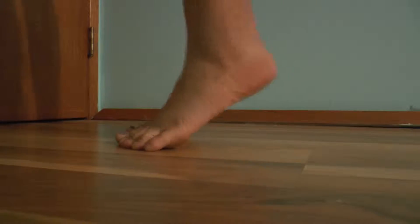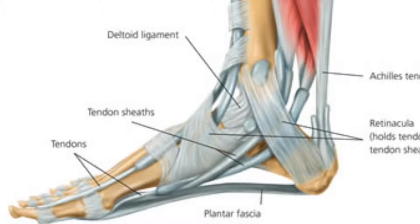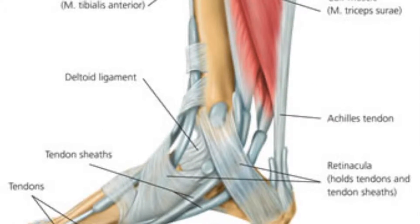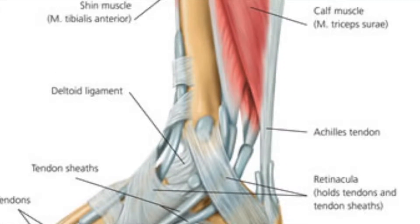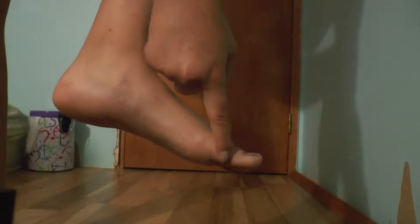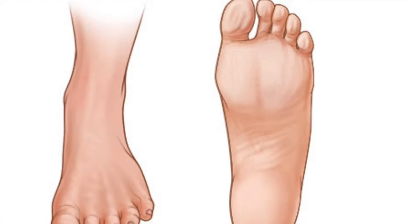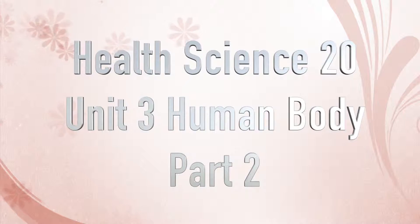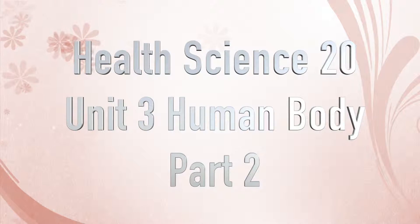Ligaments hold the tendons in place and stabilize the joints. The longest ligament is the plantar fascia, which forms the arch on the side of the foot from the heel to the toes. This gives the foot balance and helps with walking. That is the basic anatomy of the foot.